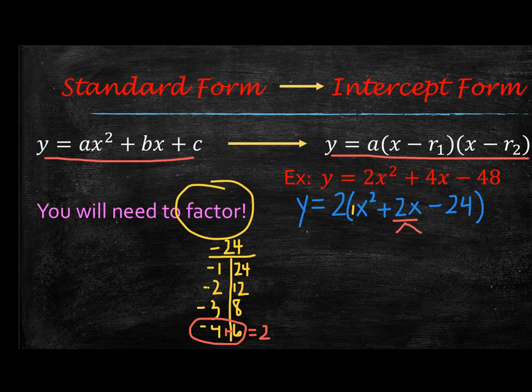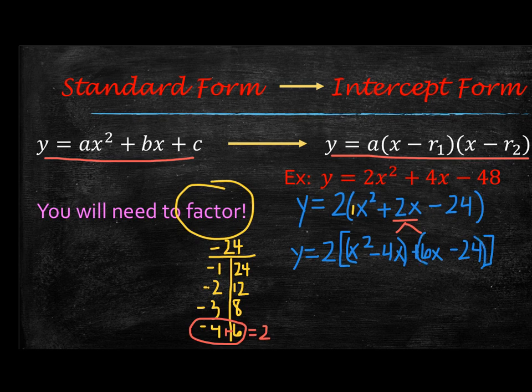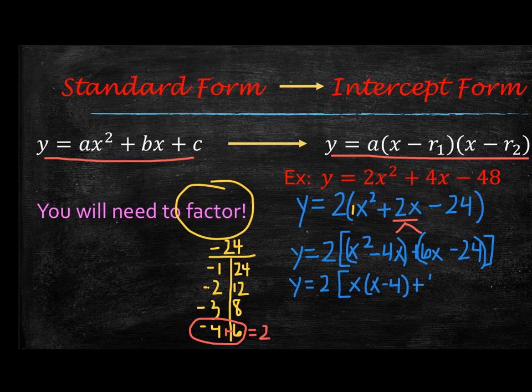So I'm going to now split this middle term. I will go ahead and bring down what I have. So I'll have y equals 2, then I'm going to go ahead and switch to a bracket. So then we will have x squared, and then when I split that, I will have minus 4x and plus 6x and then minus 24. So grouping, you'll group your first two together, and then you'll group your last two together. I'm just bringing down the outside all the way down, so y equals 2. Now I'm going to look for a GCF in the first parenthesis. I can divide out an x, and then I'll be left with x minus 4. And over here, I can divide out a 6, so I'm going to bring out the 6, and I will be left with x minus 4.